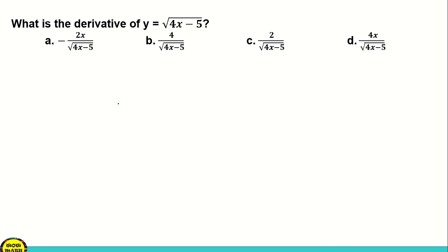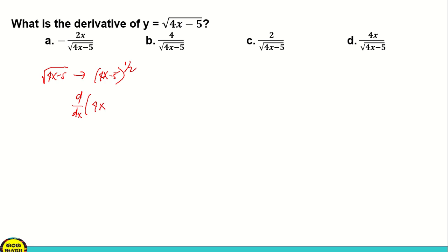For the first question, what is the derivative of y equal to the square root of 4x minus 5? We have four choices. We know that the square root of 4x minus 5 can be transformed into 4x minus 5 raised to 1 half. So we are going to get the derivative of 4x minus 5 raised to 1 half.